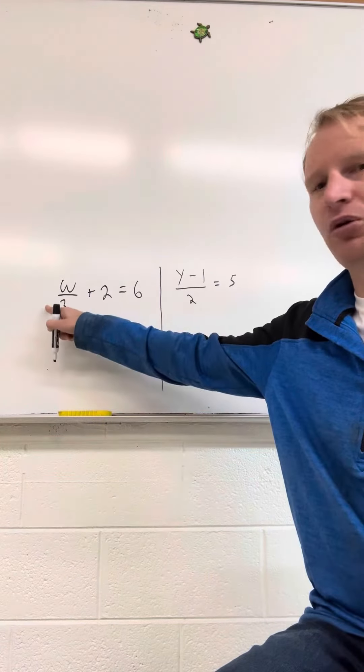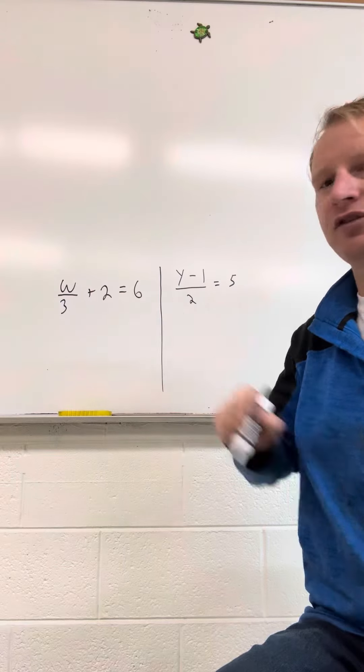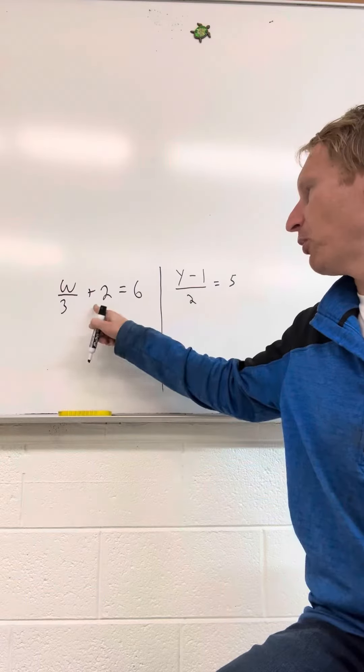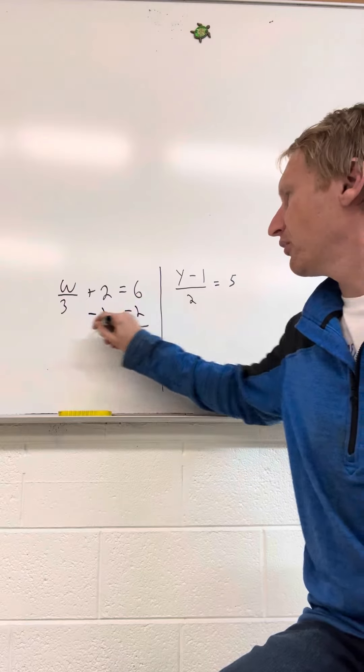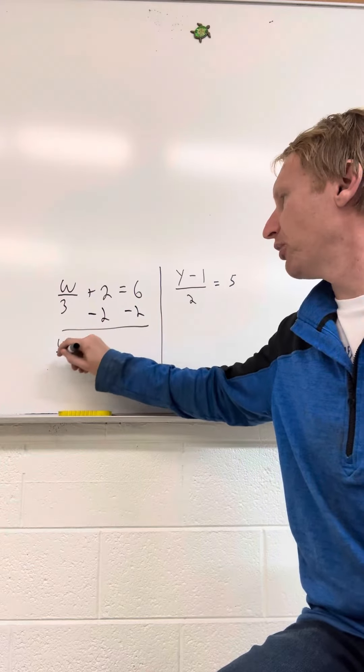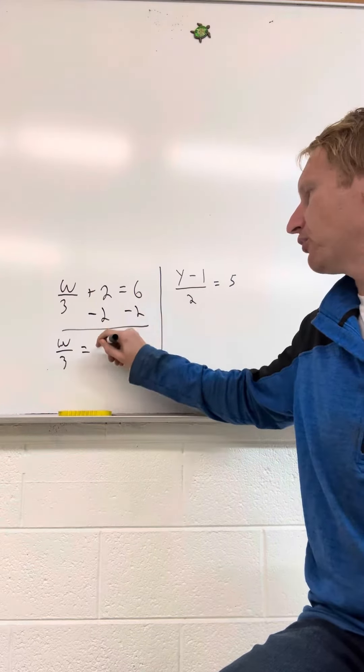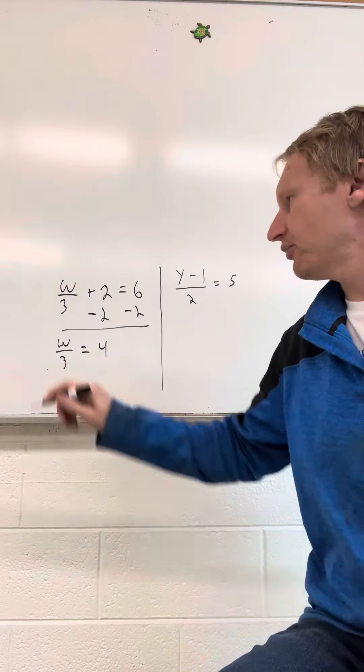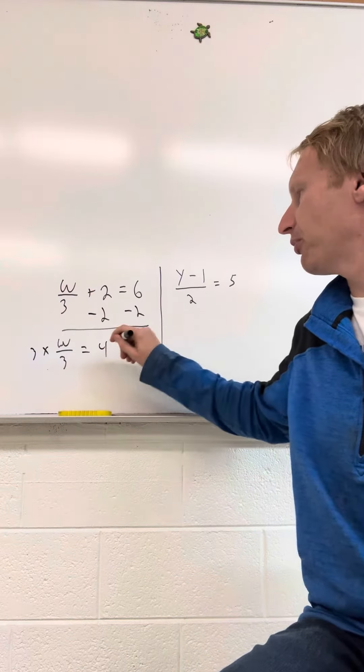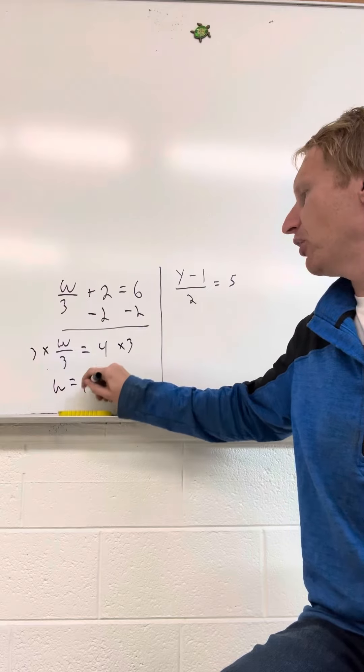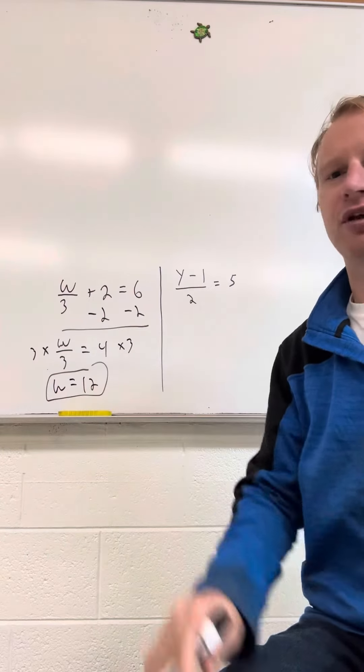The first one, we have w over 3 plus 2 equals 6. And for this problem, we want to subtract 2 from both sides first. And then we get w over 3 is equal to 6 minus 2, which is 4. Then the second step is we're going to multiply both sides by 3. And then we get w equals 12, and that'll be our answer to the equation.